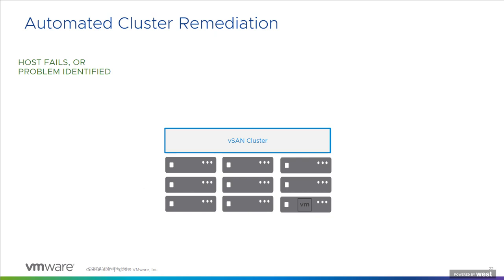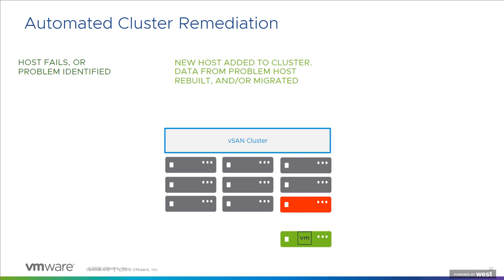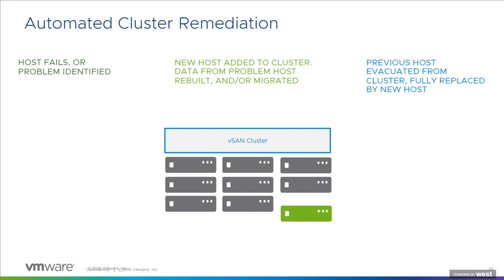Now that we know what our environment could look like, how do we protect workloads in VMC? Although all hosts are built with redundant components, failures may occur. Since this is delivered as a service, we take advantage of a VMC feature called automated cluster remediation. If we detect an issue with a host or a host failure, we add an additional host to the cluster, configure it, and start rebuilding or migrating data. Once complete, the failed host is removed from the cluster — nothing for you to worry about. The benefit is that you don't need to plan for additional host capacity for high availability or to avoid resource depletion in case of failure.